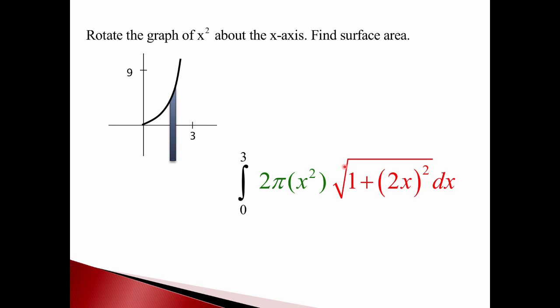My radius is this distance. So how far is that? Well, x squared to zero. So the circumference there is 2 pi x squared.